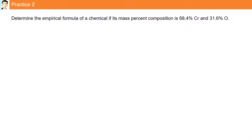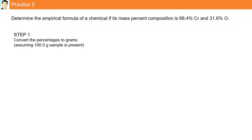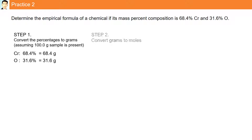Practice question 2: determine the empirical formula of a chemical if its mass percent composition is 68.4% chromium and 31.6% oxygen. The first step is to convert percentages to grams: 68.4 grams of chromium and 31.6 grams of oxygen. Step 2 is to convert from grams to moles.